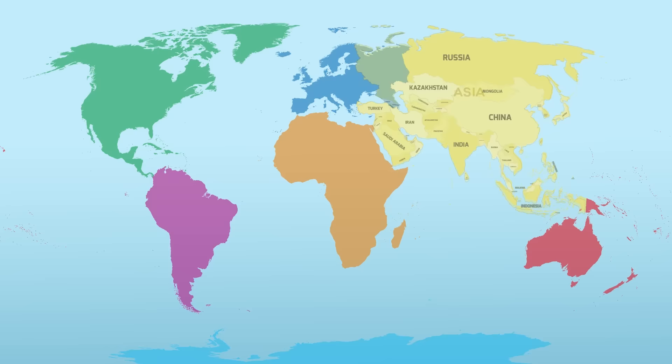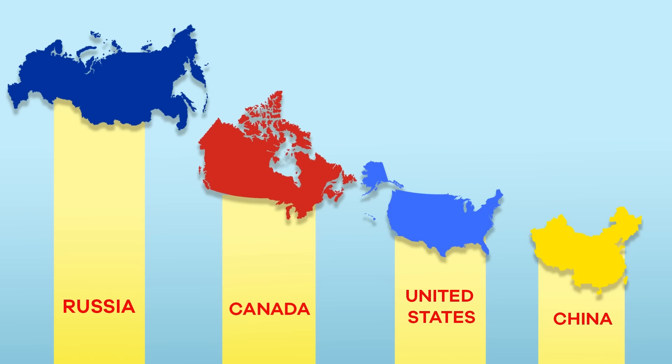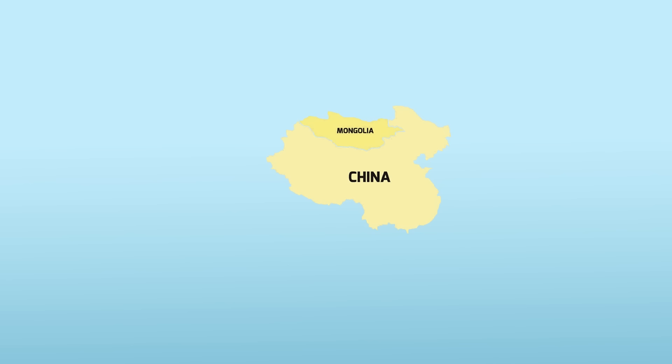Officially known as the People's Republic of China, China is located in Asia, which is the largest and most populated continent in the world. It is the fourth largest country in geographic size, behind the countries of Russia, Canada, and the United States. It shares borders with the People's Republic of Mongolia, Russia, Kazakhstan, and many others.